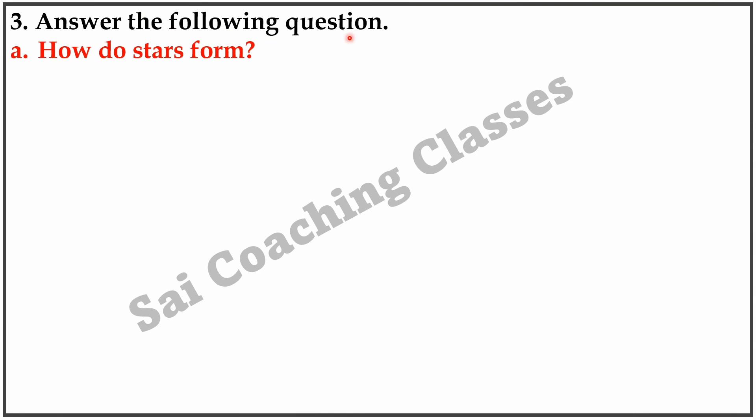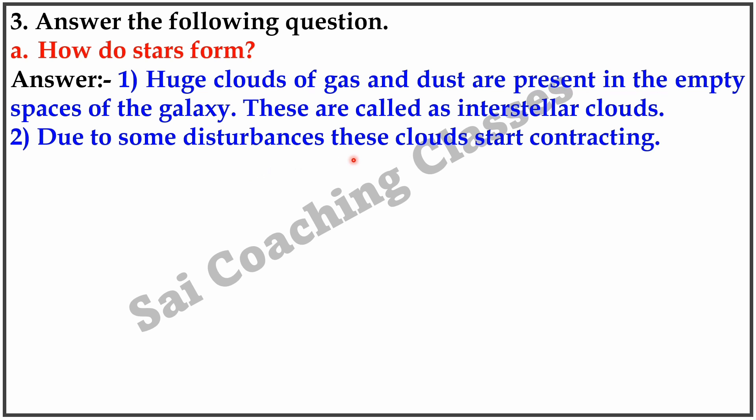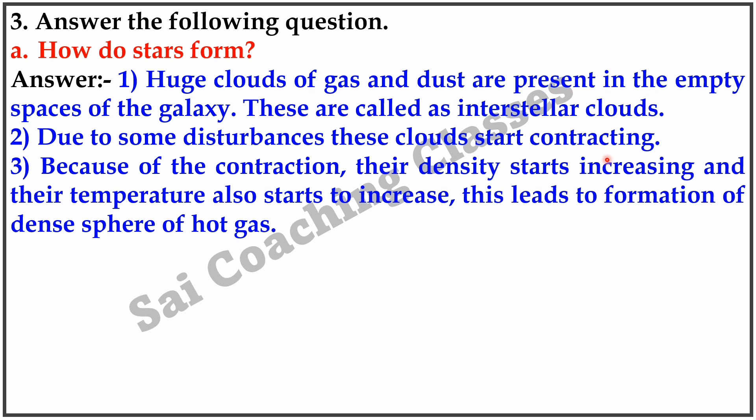Question 3. Answer the following questions. A. How do stars form? Answer: Huge clouds of gas and dust are present in the empty spaces of a galaxy. These are called interstellar clouds. Due to some disturbances, these clouds start contracting. Because of the contraction, their density starts increasing and their temperature also starts to increase. This leads to formation of dense spheres of hot gas.